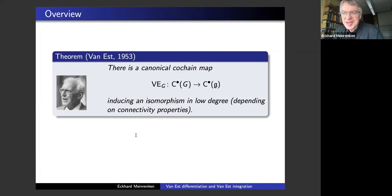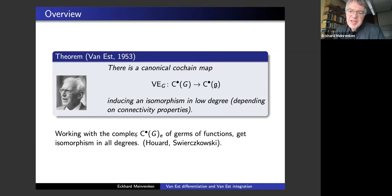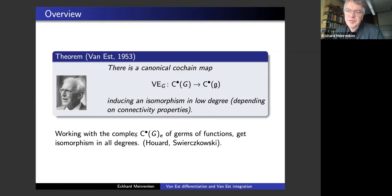Looking at these old Van Est papers is actually somewhat amusing because he starts out with elementary exposition of differential forms — he assumes the reader doesn't know what a differential form is — but then ends up talking about spectral sequences. If you work instead with germs of functions at the group unit, you actually get an isomorphism in all degrees. This was explicitly worked out by two authors independently.